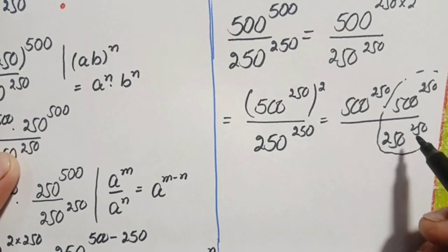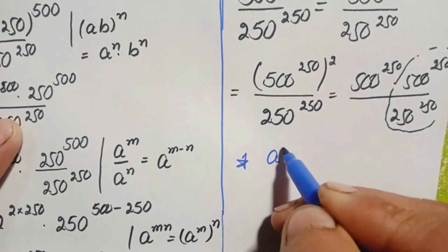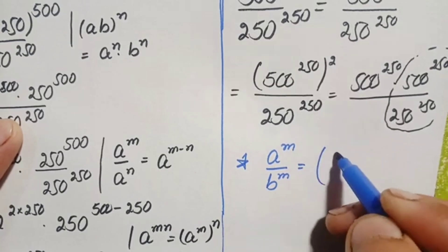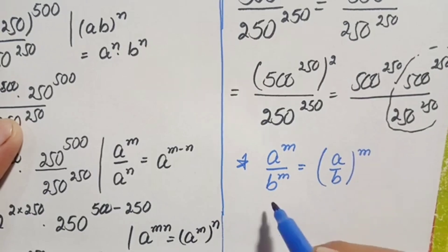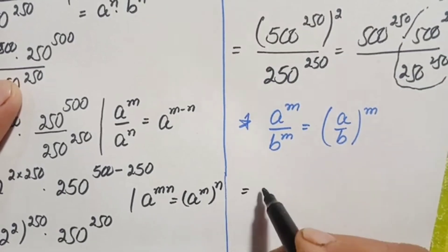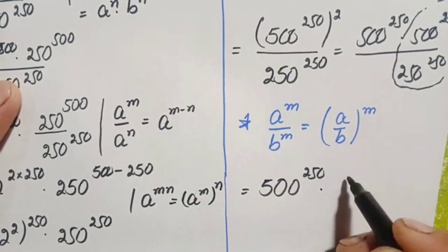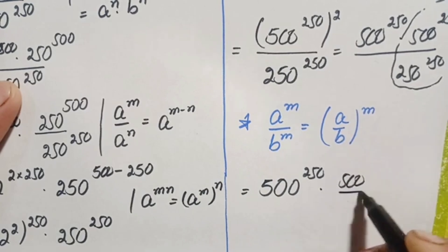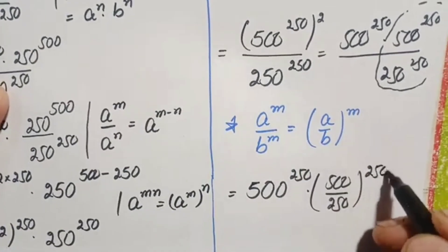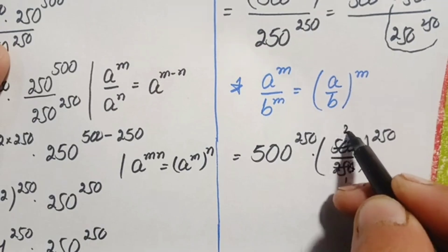These two numbers have the same power of 250, so we use the same-power division exponential identity: a raised to power m divided by b raised to power m equals a over b, all raised to power m. Applying this identity, we divide the bases: 500 divided by 250. Cancelling the zeros, 500 divided by 250 simplifies to 2.